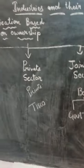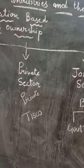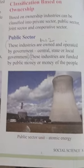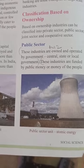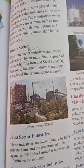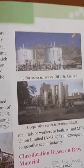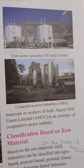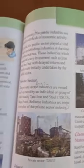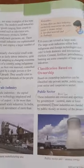This is the classification of industries on the basis of ownership. Now I will show you some pictures related to such industries. This is the public sector — a picture of the industry, that is atomic energy. This is the private sector — TISCO, the example I gave. Joint sector — Oil India Limited. And cooperative sector — Amul. This is how the industries are classified on the basis of ownership.